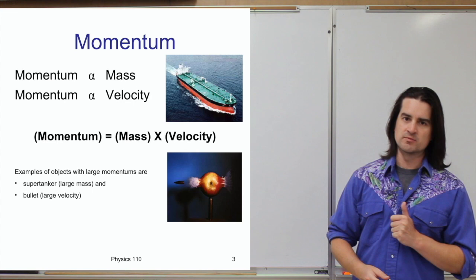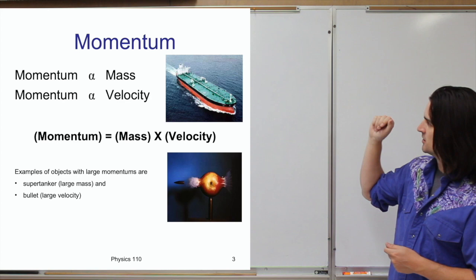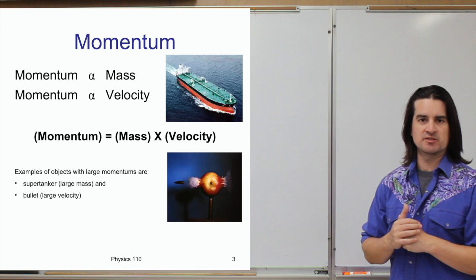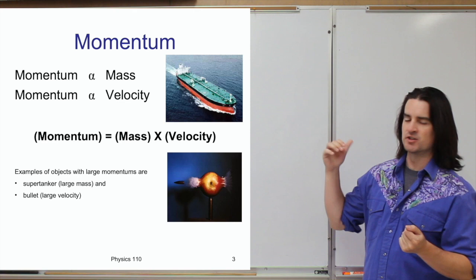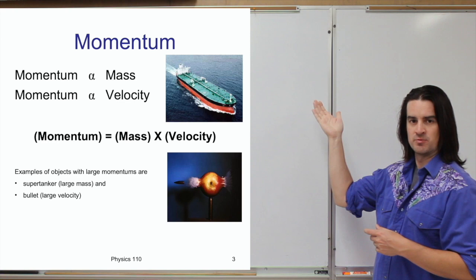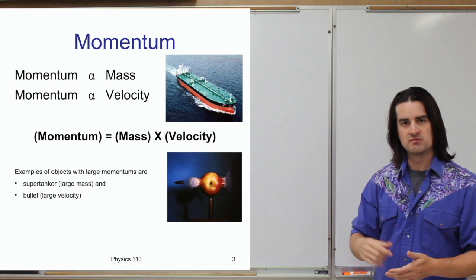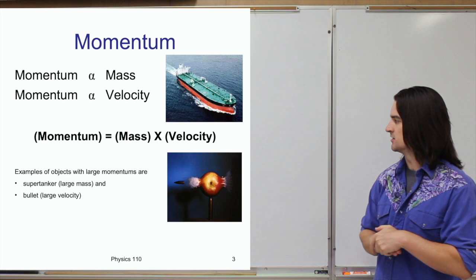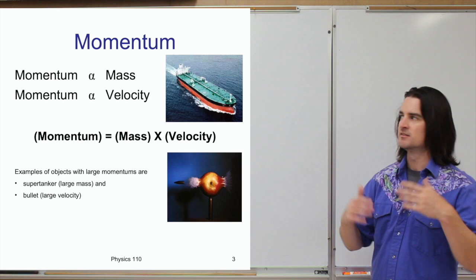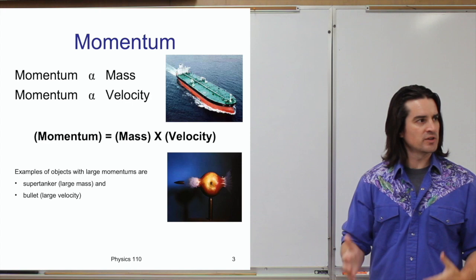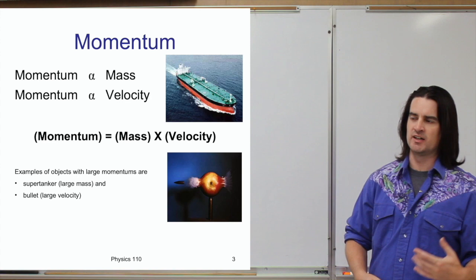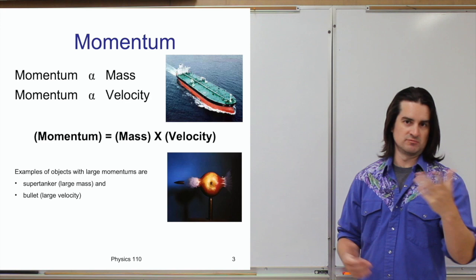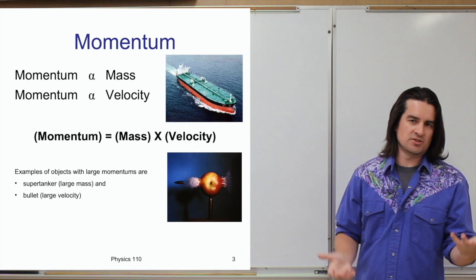Given that momentum is proportional to both mass and velocity, you can have large amounts of momentum in different ways. For instance, a supertanker is not moving very quickly, but has an incredibly large mass, so its momentum is huge — you don't want to get in the way of a supertanker. Similarly, a bullet has a very small mass but a very large velocity, so it also has a large amount of momentum. Don't want to get in the way of bullets either.